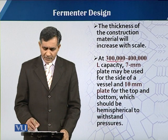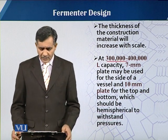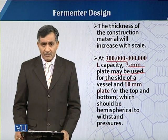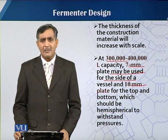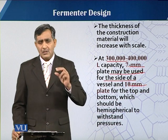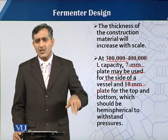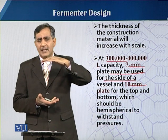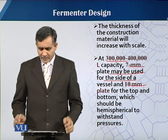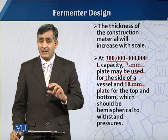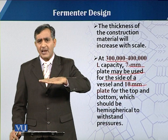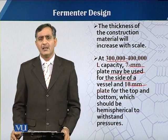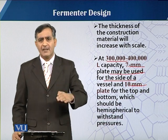As reported in the literature, for a fermenter having 300,000 to 400,000 liter capacity, a 7 mm plate may be used for the side vessel walls, while the top plate is 10 mm thick. So 7 mm plate is used for the side walls, and both the top and bottom plates are mostly 10 mm thick. Importantly, the bottom and top should not be flat but semi-spherical, as a semi-spherical shape is superior to a flat surface or bottom.